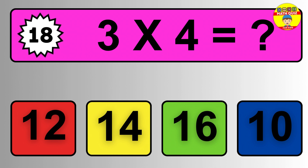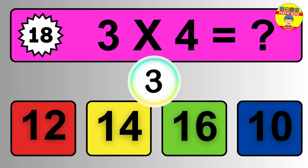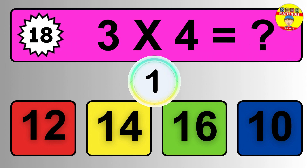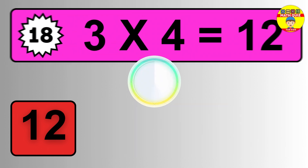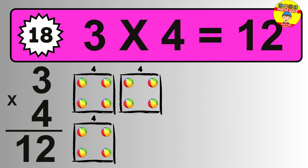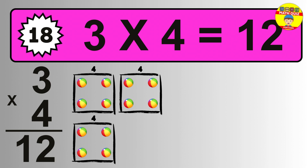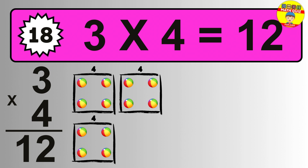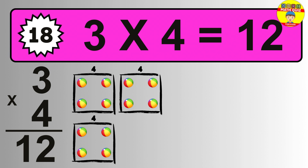Question eighteen: three times four equals what? The answer is three times four is twelve. To calculate, we have three groups with four balls each. So how many balls do we have? Twelve balls.